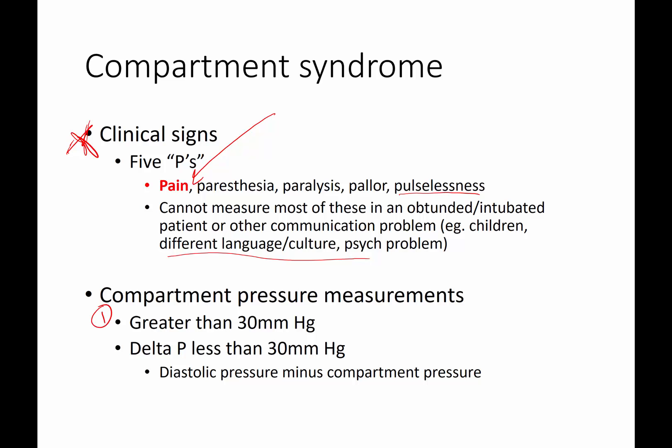There are two schools of thought. The first says that greater than 30 millimeters of mercury — if you check pressure measurements, which requires sticking a needle in the leg or wherever, and you get a pressure greater than 30, it's a compartment syndrome. The second school of thought says you should look at a pressure gradient, the so-called delta P, not just an absolute pressure. For instance, if somebody's diastolic pressure is 80 and their compartment pressure is 35, they have enough of a pressure head to still perfuse that compartment. Some put this delta P at 30, some at 20, but people feel you should look at that rather than just the absolute number of 30.